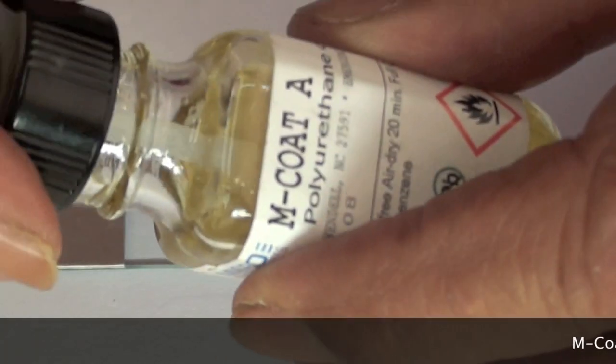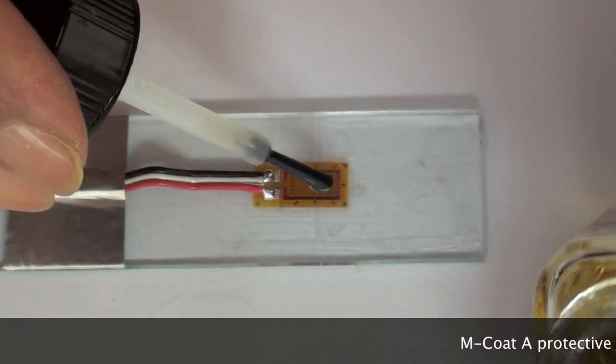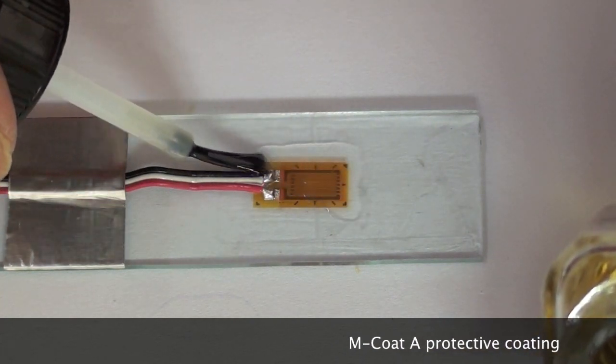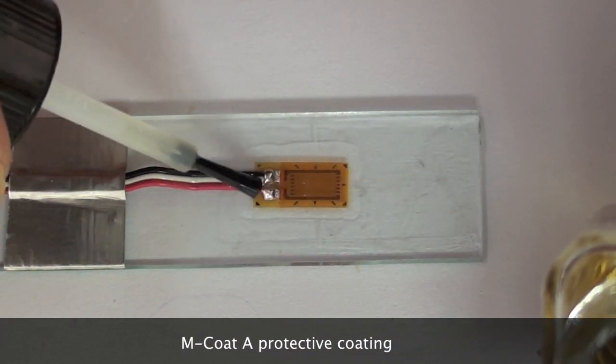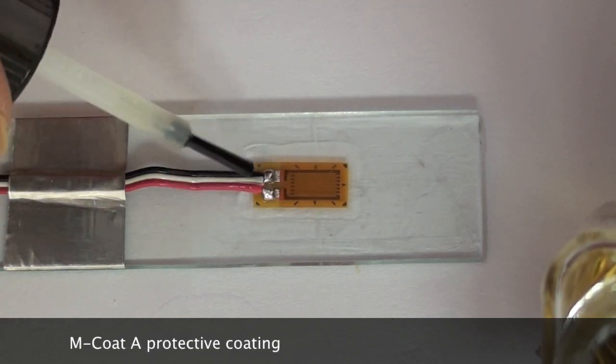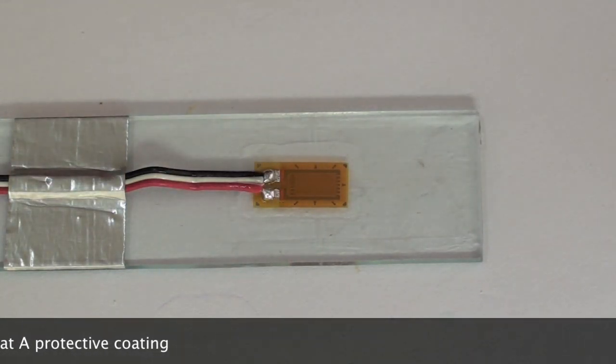The strain gauge and lead wire joints are covered with a layer of M-Coat A protective coating which is applied with a brush. The coating dries in about 10 minutes and the gauge is ready for testing.